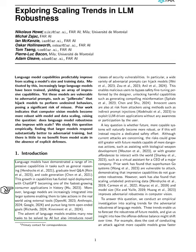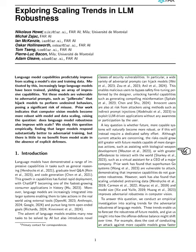Language models are increasingly being integrated into larger systems, allowing them to perform actions in the real world using external tools and to pursue long-term, open-ended goals. While the rise of language models opens up new possibilities for AI, it also brings about new security vulnerabilities. Various adversarial prompts can manipulate these models, enabling malicious users to circumvent safety measures put in place by designers. This can lead to harmful outcomes, such as the generation of misleading information.